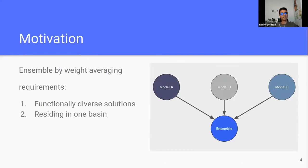To the best of our knowledge, there are at least two requirements to make weight averaging for making ensembles. One is that we need models which are functionally diverse solutions, because we want to look at the same problem from different viewpoints. The second requirement is that the solutions should reside in one basin — if not, then the average of such solutions will reside in high loss.